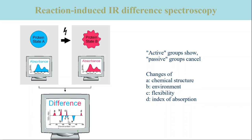Only one band is observed when the reaction results in a change of the absorption coefficient of a vibrational mode, for example because of a polarity change of the vibrating bonds. A negative band in the difference spectrum then indicates a reduced absorption of the product states B as compared to the initial state A. In contrast, a positive band indicates an increased absorption of the product states.